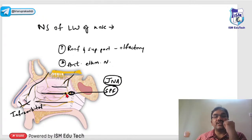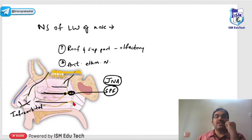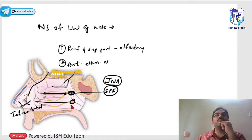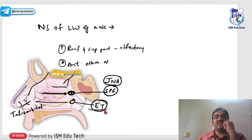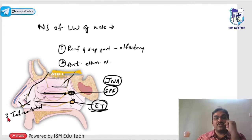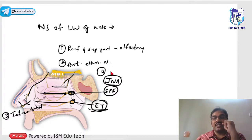The sphenopalatine foramen lies at the posterior end of the middle turbinate. Similarly, there is an opening at the posterior end of the inferior turbinate — that is the Eustachian tube opening, which is very well known. Another nerve entering through the sphenopalatine foramen is the sphenopalatine nerve.